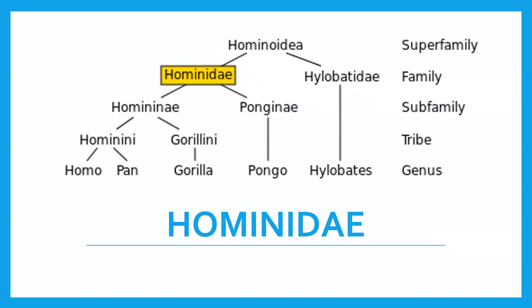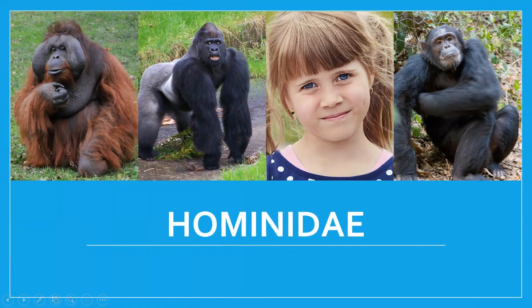Moving from the order down to the family Hominidae, we've got rid of the lemurs and now we've got Pongo (orangutan), Gorilla, Pan (chimpanzee), and Homo. So we have orangutan, gorilla, human, and chimpanzee. You might look at that and say they are not similar, but compare them to a cow, a potato plant, or an elephant — they have many similarities compared to other species. You've got those forward-facing eyes and limbs with five digits on each end.